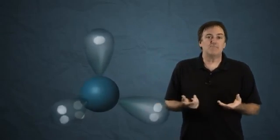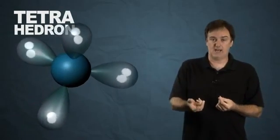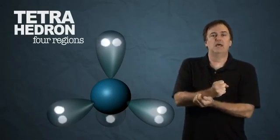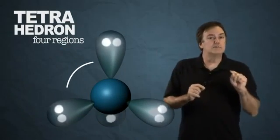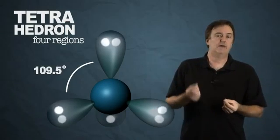This gets you a shape that we call a tetrahedron or tetrahedral geometry. It's four regions around a central, all perfectly symmetric. If you take a look and spin the molecule around and look at it, every region is equivalent. The bond angles are now down to 109.5 degrees.